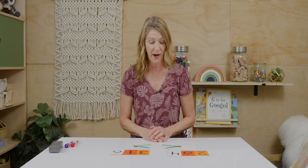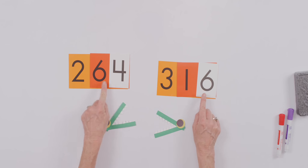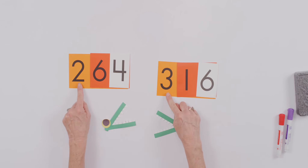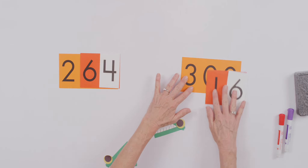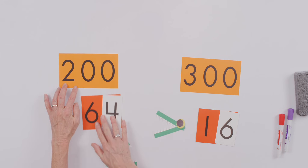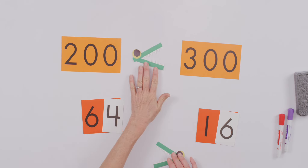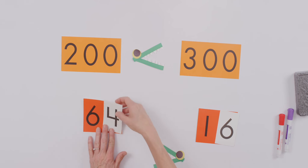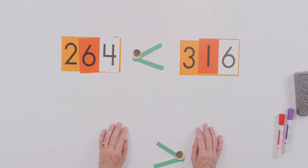Now when we look at these numbers and we want to say which one is greater, what column do you think is the most helpful for us to look at? Should we start in the ones? Or the tens? Or the hundreds? You got it — let's look in the hundreds. If I pull my tens and ones off here and pull these tens and ones off, I can see really easily that two hundred is less than three hundred. So likewise, two hundred sixty-four is less than three hundred sixteen.